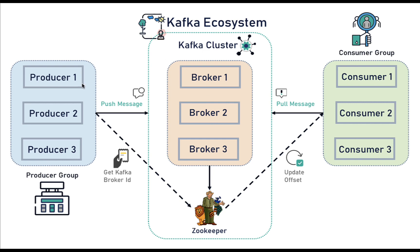Here you can see producer and consumer. A producer is an application that produces messages and sends them to the Kafka broker. A producer can produce any kind of message — it can be an event, a stream of records, stream of data; the event can be Avro, plain text, string, or JSON. The producer sends the message to the Kafka cluster. The consumer will consume those messages from the Kafka broker. There is one more Kafka term — topic. We basically create a topic in a Kafka cluster so that a consumer can subscribe to that particular topic.